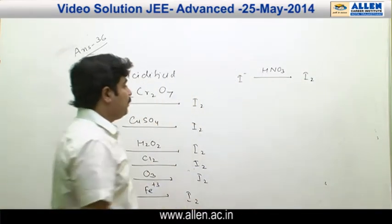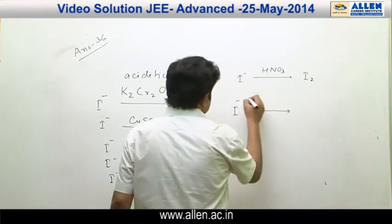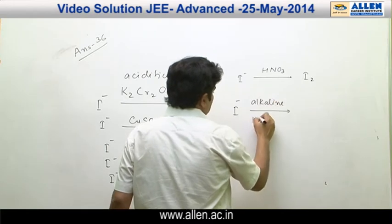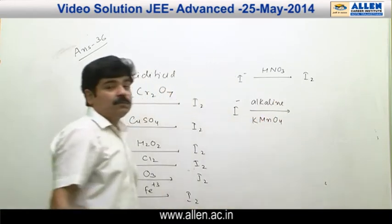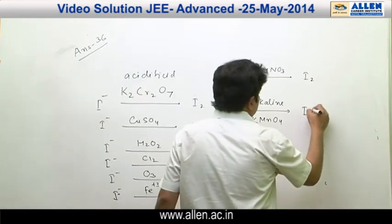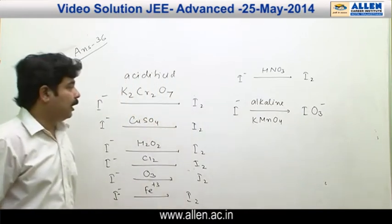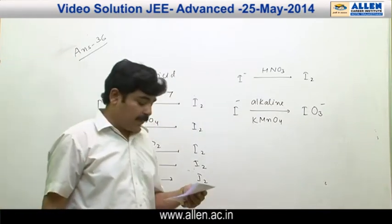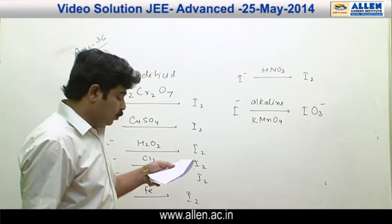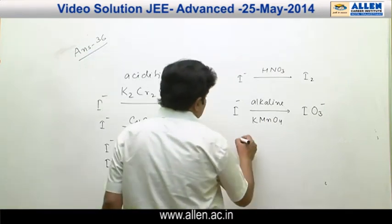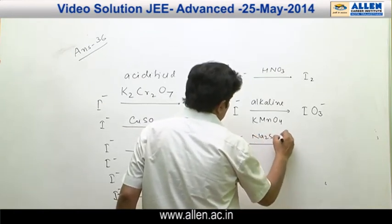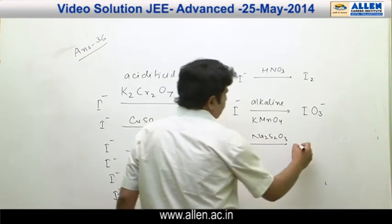When I⁻ reacts with alkaline KMnO₄, the −1 oxidation state of iodine is converted into +5 and IO₃⁻ is formed, while MnO₄⁻ is converted into MnO₂. The last reagent is Na₂S₂O₃. When I⁻ reacts with Na₂S₂O₃, there is no reaction.